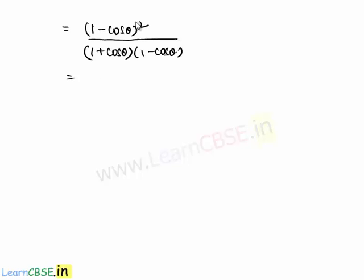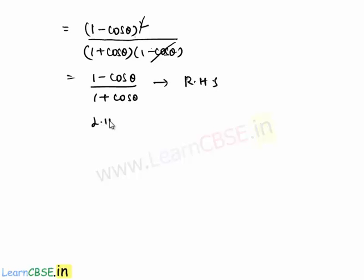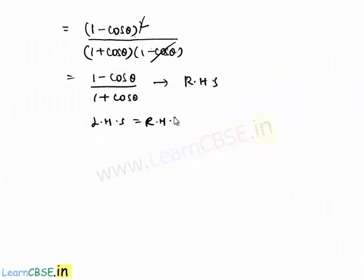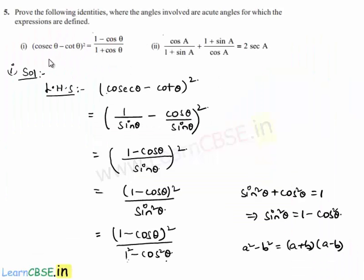Here, if we observe the numerator and denominator, we have a common factor of 1 minus cos theta, which cancels one 1 minus cos theta. So finally we get 1 minus cos theta by 1 plus cos theta, which is our right hand side. So here we got LHS equal to RHS. So finally we can say that cosecant theta minus cot theta whole square is equal to 1 minus cos theta by 1 plus cos theta.